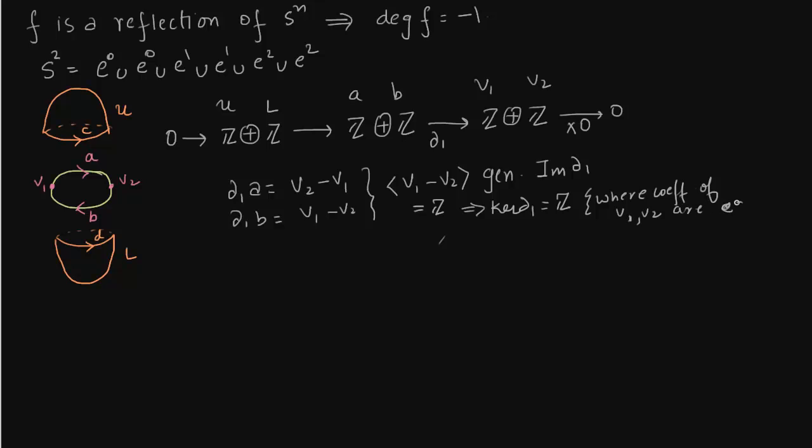That is where coefficients of V1 and V2 are equal. So it's best to understand kernel and images in terms of maps and free groups rather than in terms of topology. What about delta_2? Now delta_2 of upper hemisphere gives us edge C. And of lower hemisphere gives us edge minus D. Now notice why these signs? Although if you see the diagram on the left, both C and D seem to be going in the same direction. But that is not so. And we will see this in a minute. So C minus D, it will generate image of delta_2 which will be integers. And obviously since it is Z^2, the kernel will be Z.